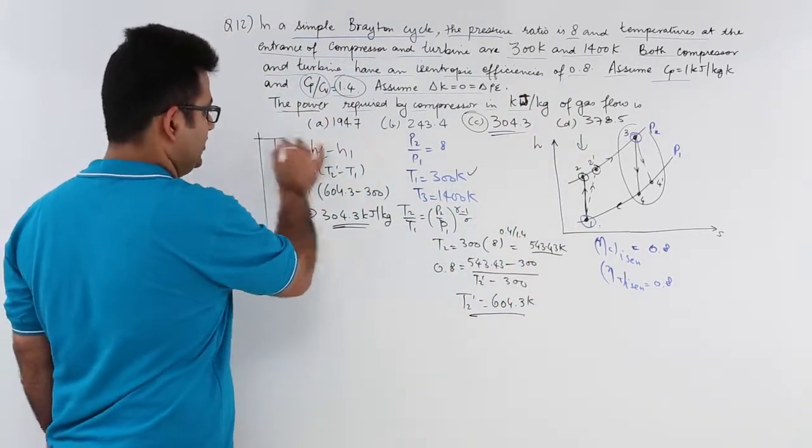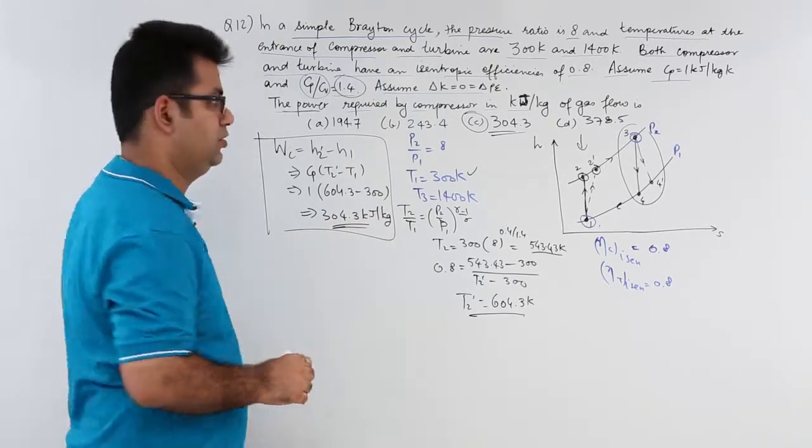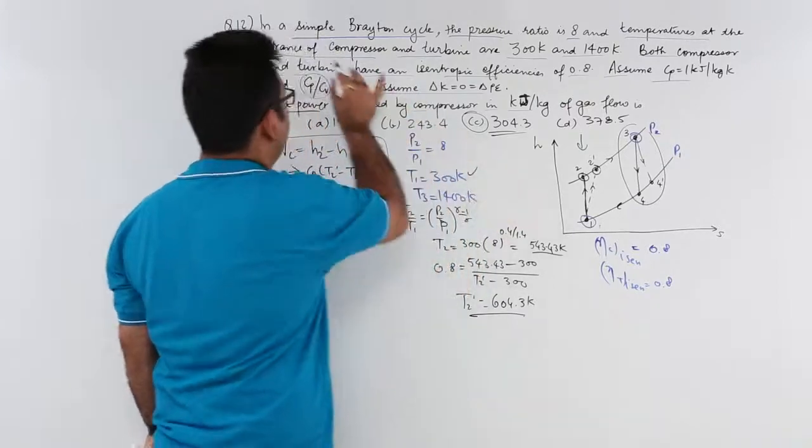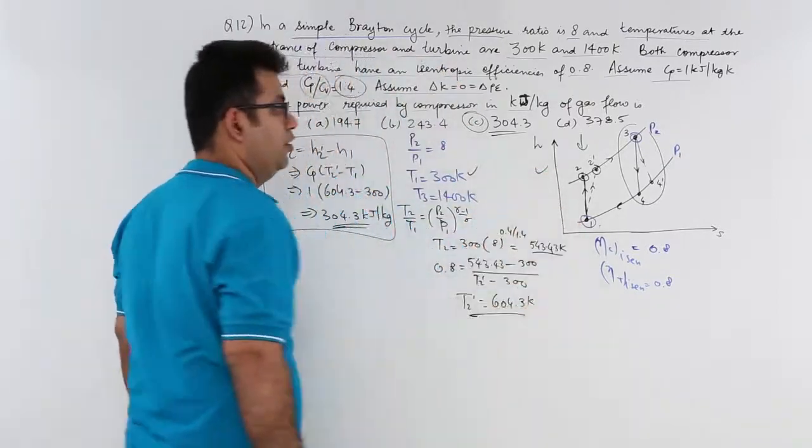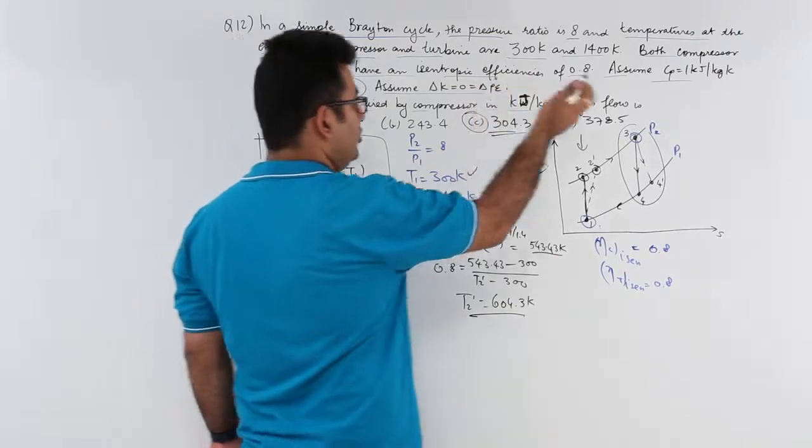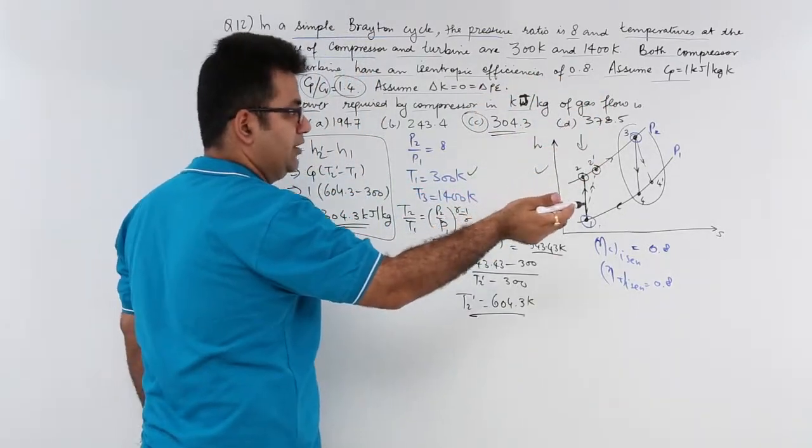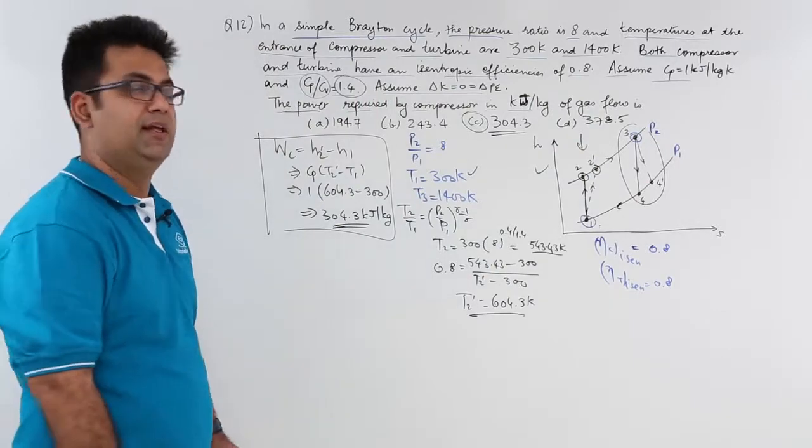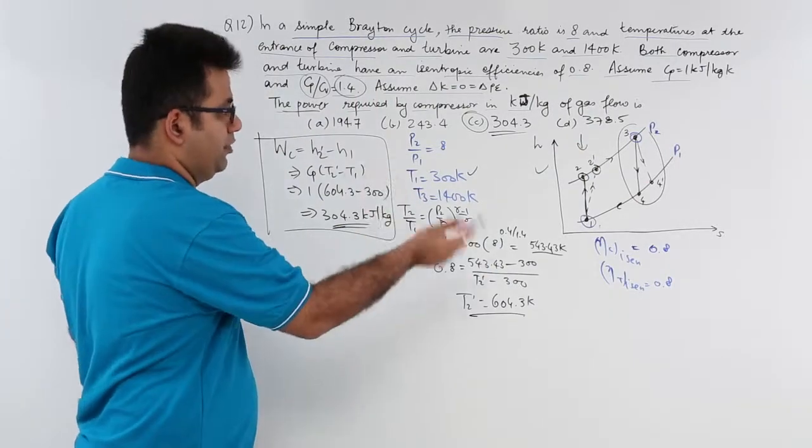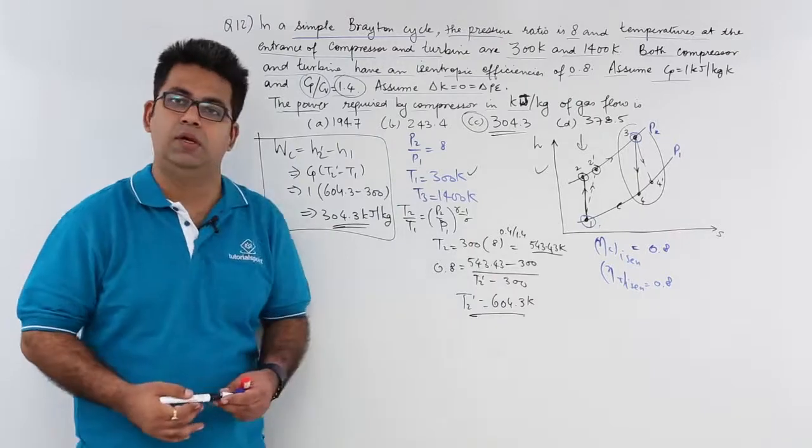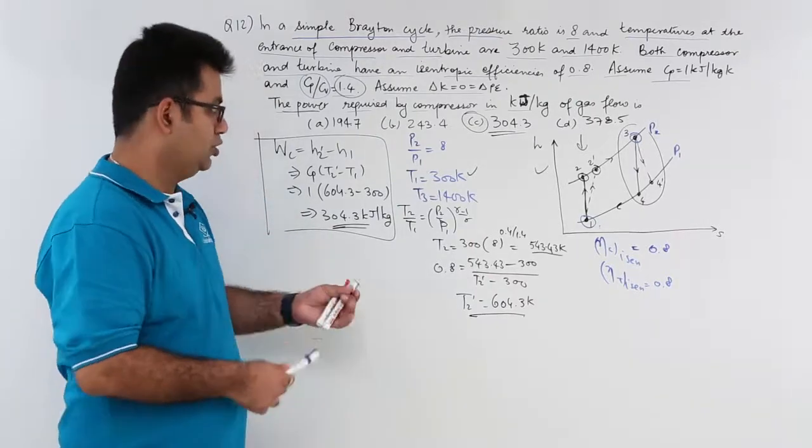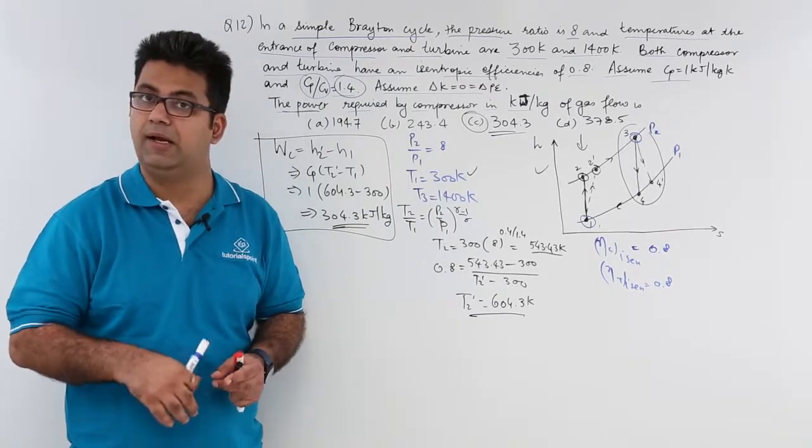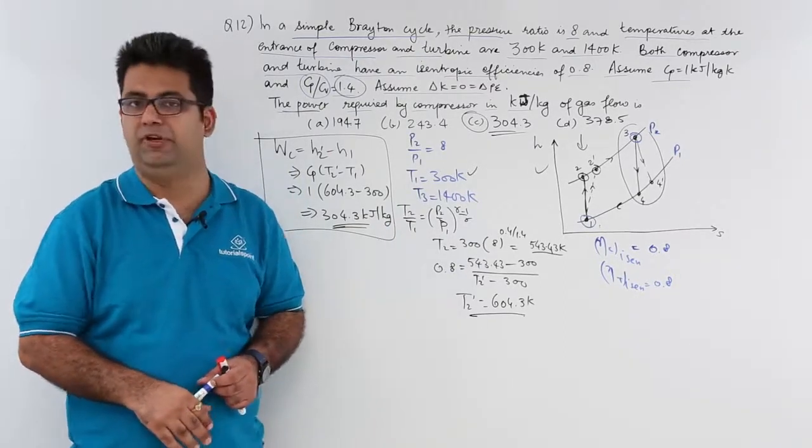So this is how you perform calculations on such a question in a simple Brayton cycle. So as you see this diagram, straight away draw this. And then you know that the efficiencies are given for compressor and turbine. So you will draw the ideal processes and the actual processes and carry on with the usual calculations. So this finishes the question number 12 on simple Brayton cycle. Now let us move on to question number 13 in the next video.